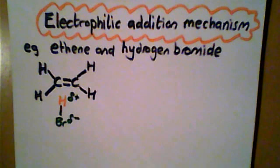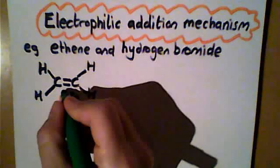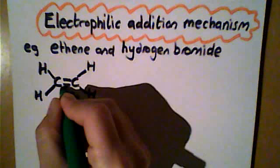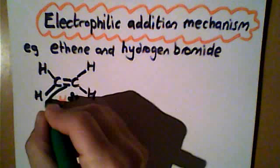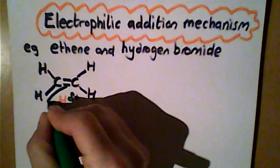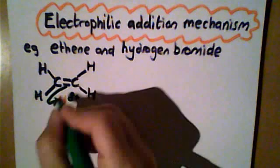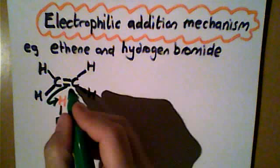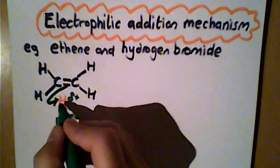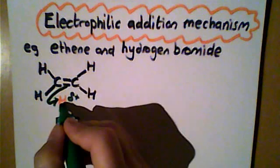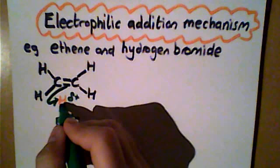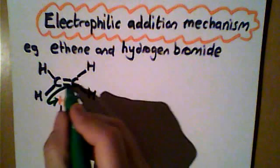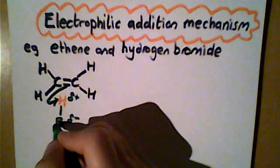We show this with a curly arrow showing the movement of the pair of electrons within the double bond moving onto the hydrogen and creating a new covalent bond between one of these carbons and that hydrogen.